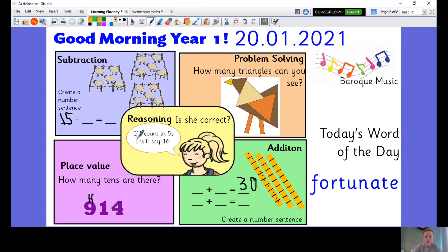Now your reasoning question. It says if I count in fives, I will say 16. So we're just going to practice counting in five. So let's do it together. Zero, five, ten, 15, 20, 25, 30, 35, 40, 45, 50. Did you say the number 16? Tell me why.